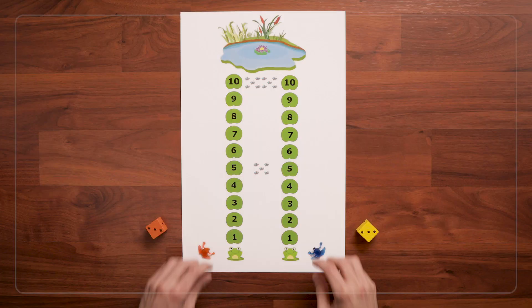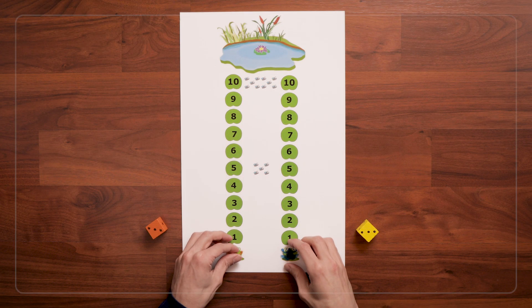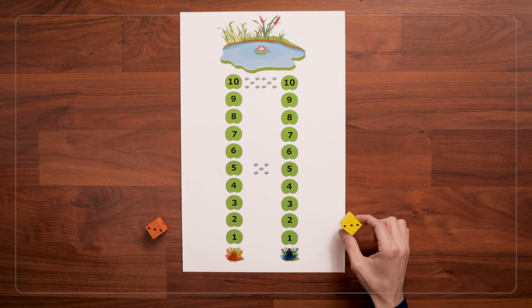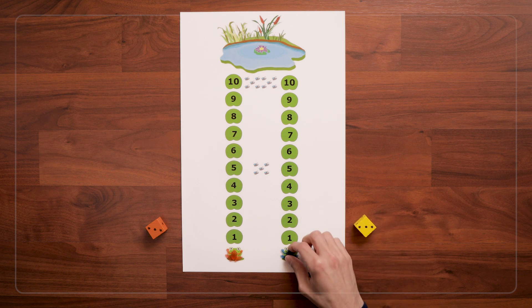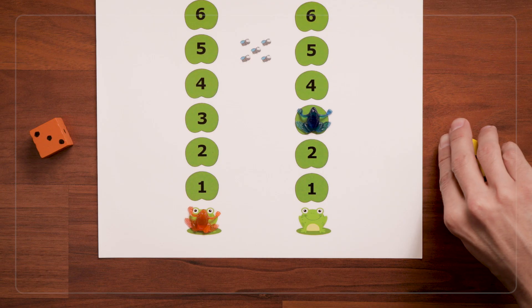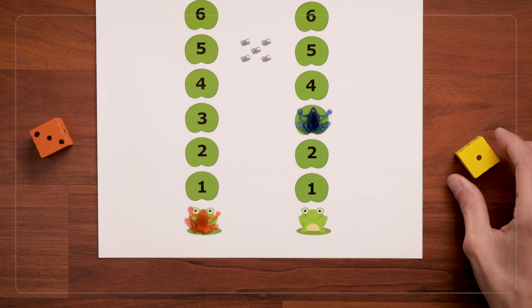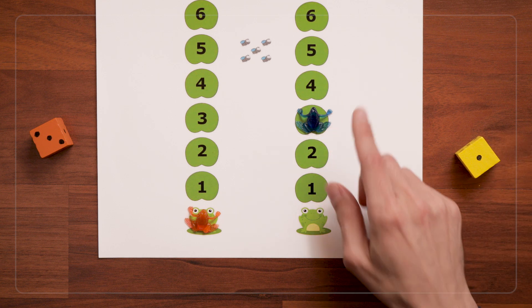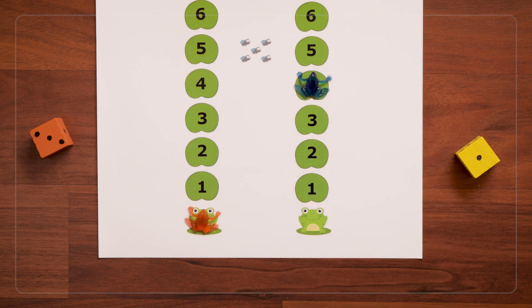Now, many kids will not yet have had experience playing board games. So they might not know that when I roll a 3, I move 1 to 3 spaces. And then when I roll a 1, I'm not going to go back to 1, I'm going to move 1 more to 4.